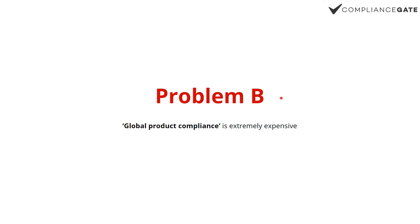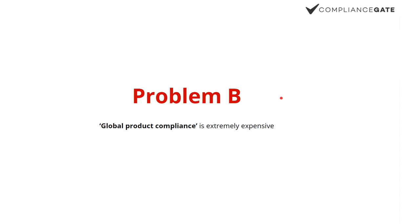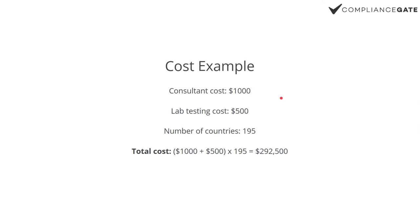Number two: global compliance is extremely expensive. If you would try to make your product compliant with every single country on earth — and there are at least 195 recognized by the UN — the costs would be enormous. Let's take a cost example: consultant cost say $1,000, lab testing say $1,500 per framework. Multiply $1,500 by 195 — that's a lot of money. Now this is just a demonstration that worldwide compliance is unattainable — it's simply not an option.